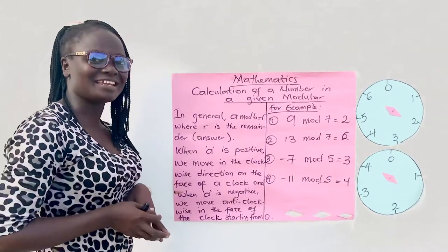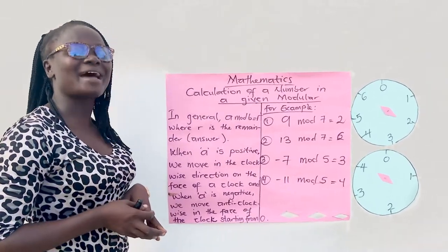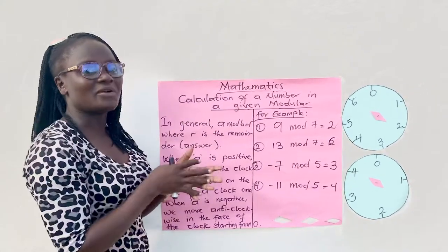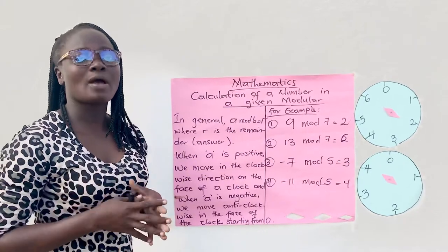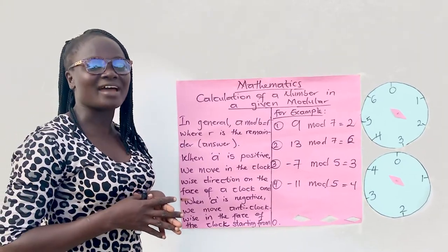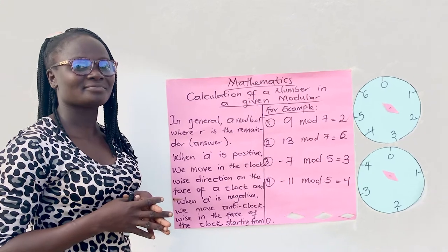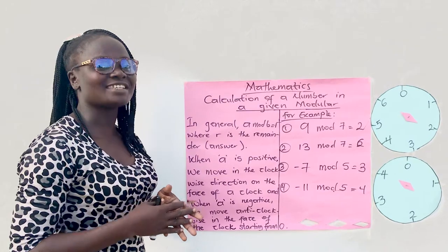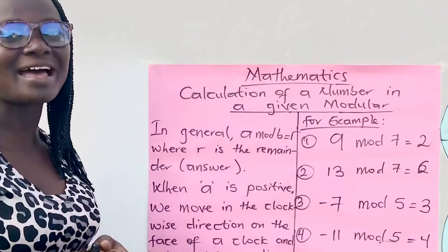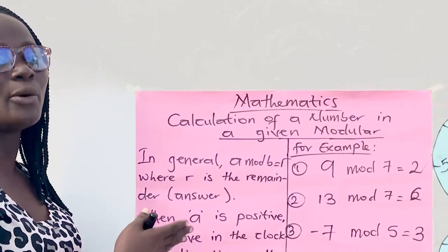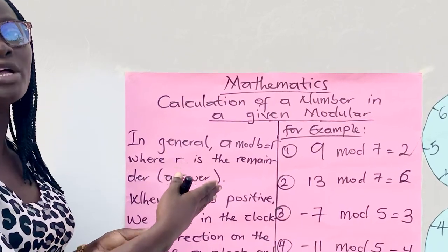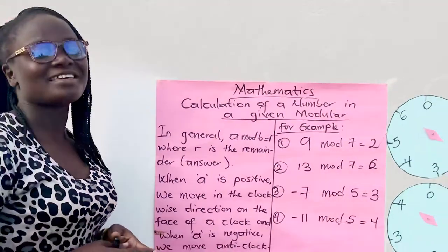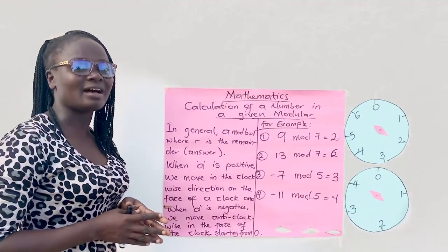By the end of the lesson, you should be able to find a number in a given modulo. In general, when you talk about modulo, we use the remainder as our final answer. We pick the first subtopic under it, which is calculation of a number in a given modulo. When you have A mod B equals R, R is a remainder, therefore it becomes our final answer.